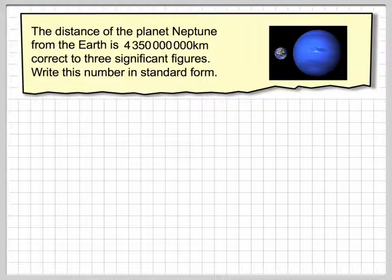The distance of the planet Neptune from the Earth is 4,350,000,000 km, correct to three significant figures. Write this number in standard form.